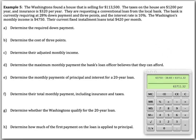This next example — example five — is going to put it all together. It will test whether you understand all the different parts of mortgages: finding down payments, points, whether you qualify for a loan, and so on. Go ahead and try to put it all together; we'll check it together in class, so please bring this with you when you come.